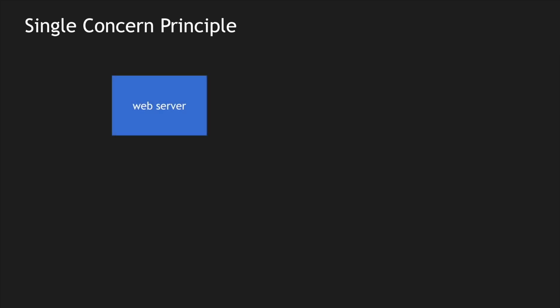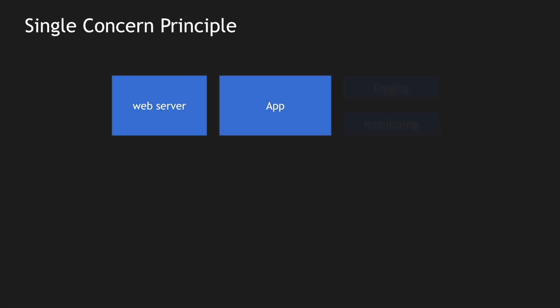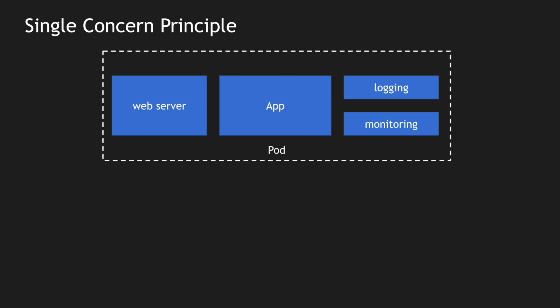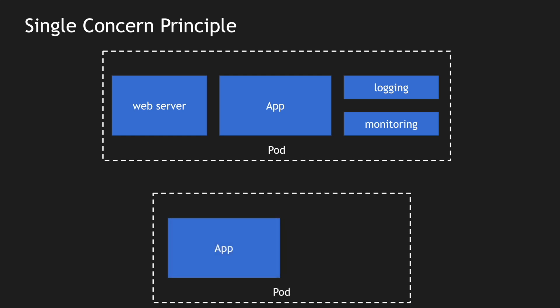Let's take an example of a web server. We have a web server, an application, and also logging and monitoring containers. Imagine all these are individual containers deployed as a single pod. My application core logic is within the app container. Logging and monitoring are different containers running as sidecars, which are getting data from my application and streaming them outside the pod to different systems. If I follow the single concern principle, I can remove the web server, logging, and monitoring containers and replace them with a common reusable pattern. For example, I have replaced all of these with Envoy.